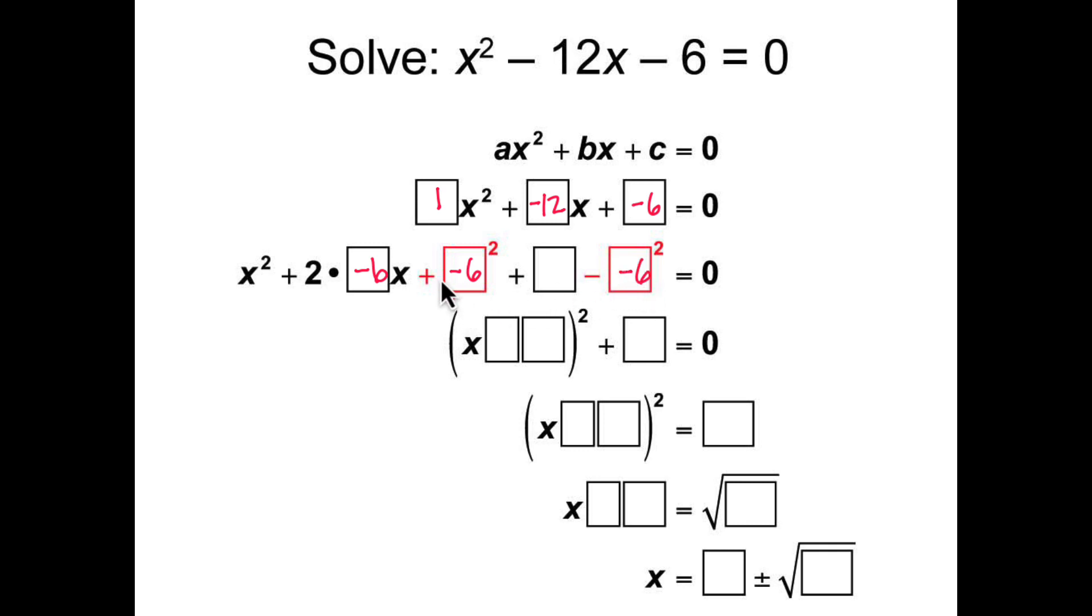So we have the plus negative 6 squared and the minus negative 6 squared, and they don't change the value of the equation. And then continuing with the value for c, we write negative 6 here.